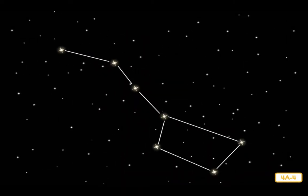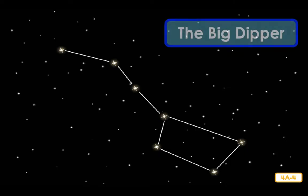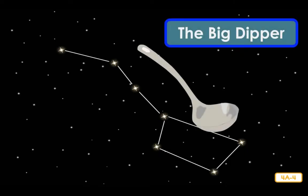One of the first groups of stars that young stargazers in the United States learn about is also the easiest one to spot. The Big Dipper looks like a giant soup ladle up in the sky. The Big Dipper is made up of seven stars.